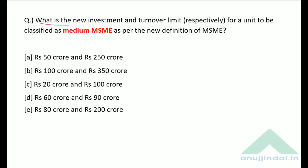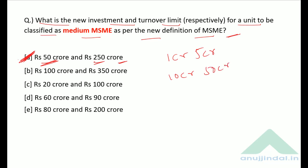What is the new investment and turnover limit for a unit to be classified as medium MSME as per the new definition of MSME? The MSME definition was recently revised. As per the revision, for medium MSME the investment limit should be 50 crores and turnover limit should be 250 crores — option A. For micro it is 1 crore and 5 crore, and for small it is 10 crore and 50 crore respectively.